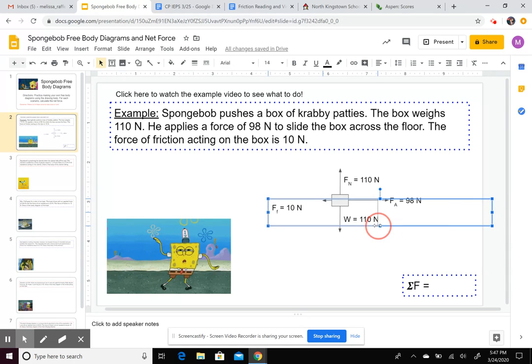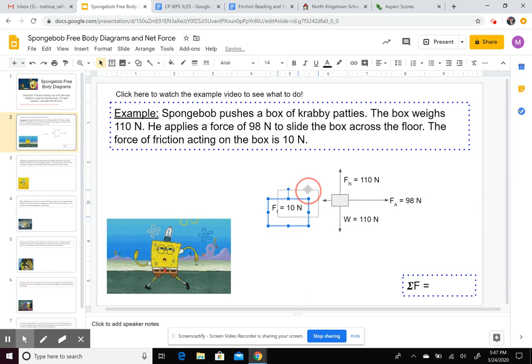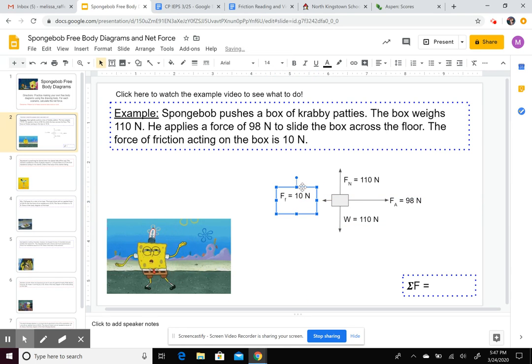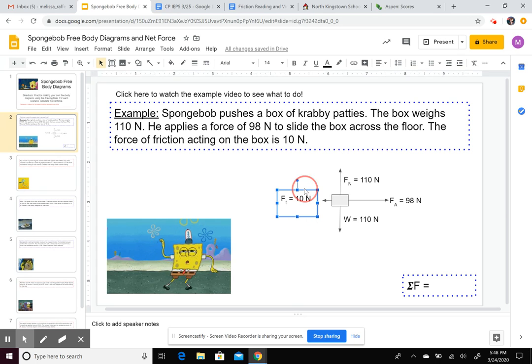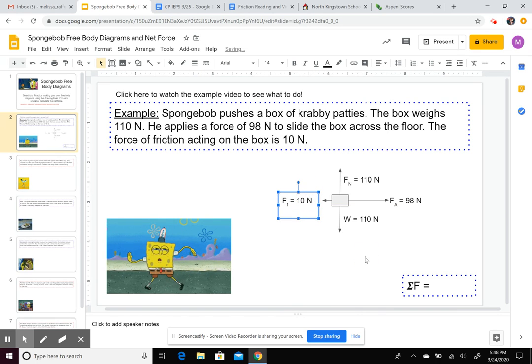Now technically, friction and weight are negative forces. So you could stick a negative sign in there if you want, or you can just stick with the magnitudes of the forces without the direction. Trying to get this lined up there. There we go. So that's our free body diagram.